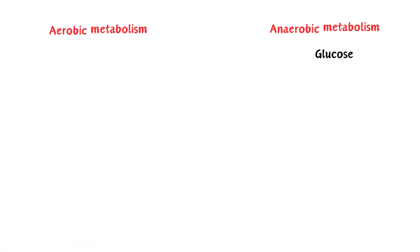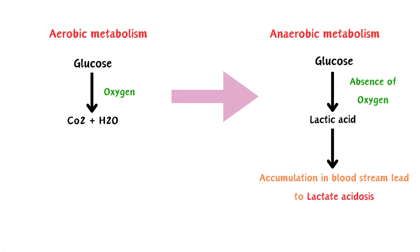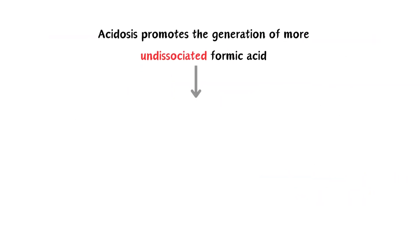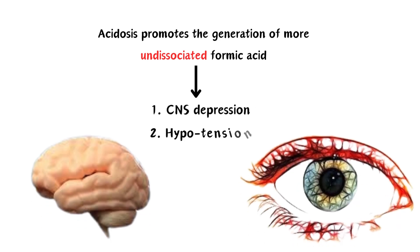Normally, cells produce energy through aerobic metabolism, but if oxygen supply is inadequate, cells switch to anaerobic metabolism, leading to lactic acidosis. Worsening acidosis promotes the generation of more undissociated formic acid, which moves into the central nervous system, causing CNS depression and hypotension. Ocular toxicity also occurs as formic acid targets the optic nerve.